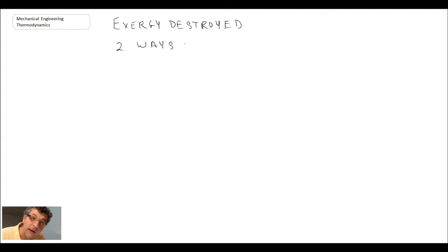When we're doing exergy destroyed, we have two ways. We can look at entropy generation as the first method, where exergy destroyed equals the surrounding or ambient temperature multiplied by the entropy generation. Or we can do the exergy balance approach.